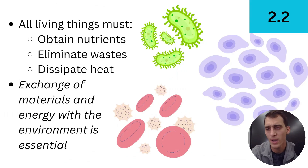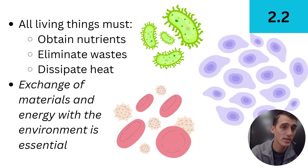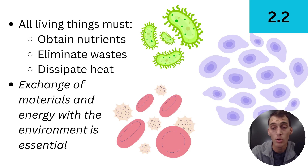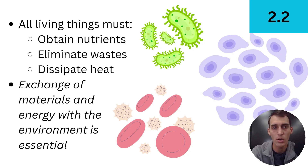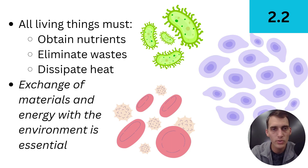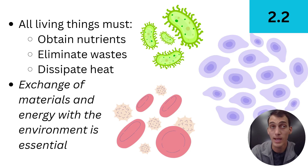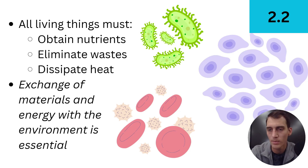A couple of ground rules about living things: not only do living things need to be made of at least one cell, but all living things — including you — need to be able to obtain nutrients, eliminate wastes, and dissipate heat. Where do you get nutrients from? You get them from your environment. We get our nutrients by eating stuff, and you get what you eat from outside of your body. So you need to be able to obtain nutrients.